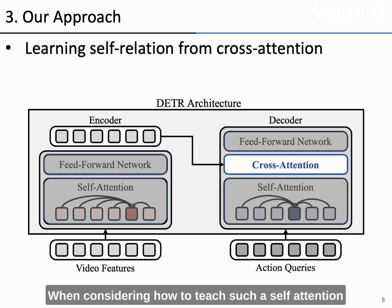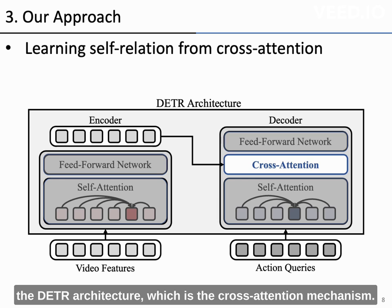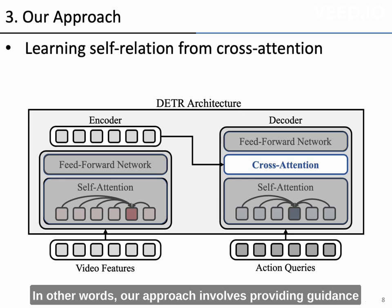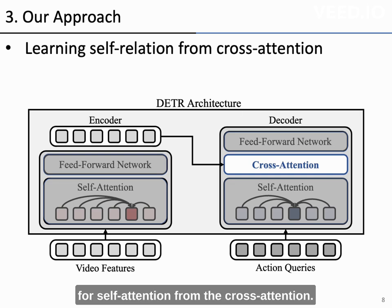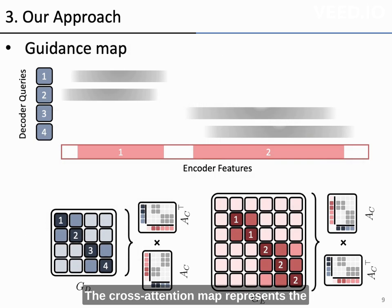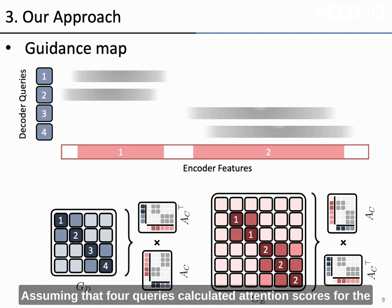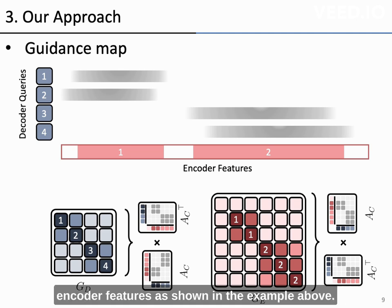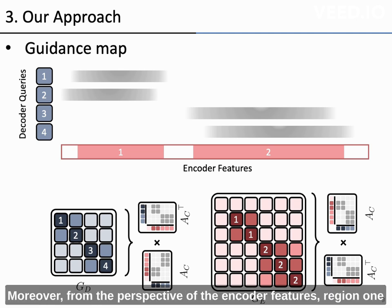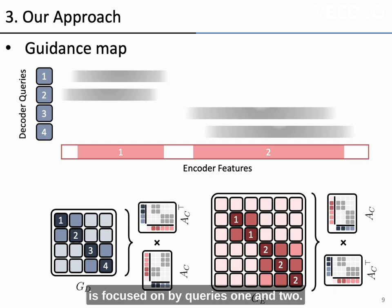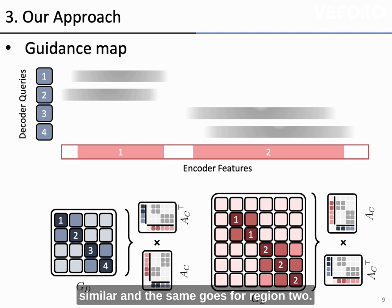When considering how to teach such a self-attention map, we focused on the one aspect unique to the DTR architecture, which is the cross-attention mechanism. Our approach involves providing guidance for self-attention from the cross-attention. The cross-attention map represents the relationship between the encoder and decoder. Assuming that four queries calculate attention scores for the encoder features as shown in the example above, we can define that queries 1 and 2 are similar, and queries 3 and 4 are similar. Moreover, from the perspective of encoder features, region 1 is focused on by queries 1 and 2, so features within region 1 can be considered similar.